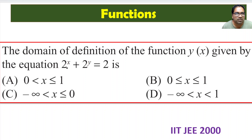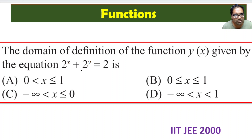Both 2^x and 2^y are positive, and their sum is 2. That means both must individually be less than 2. If 2^x were 4, then 2^y would have to be -2, which is not possible. So 2^x must be less than 2, meaning 2^x < 2^1, which means x < 1.